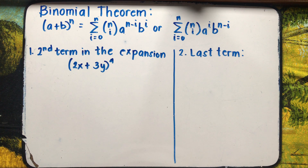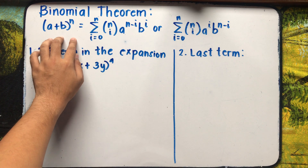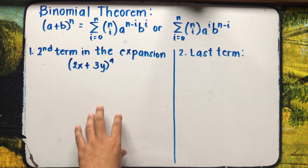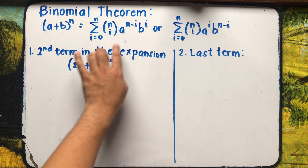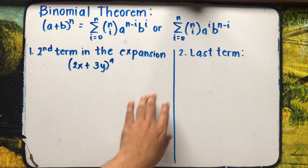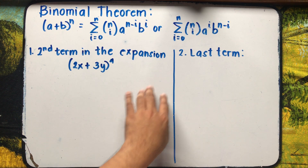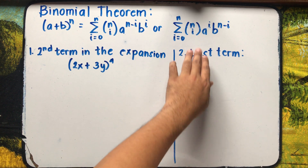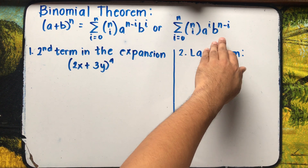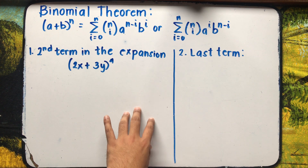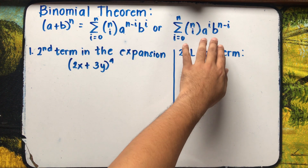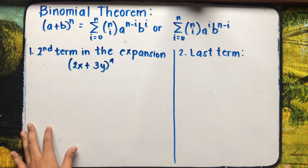Let us first review what we have discussed last time regarding binomial theorem. The expansion of (a+b) raised to n is equal to the summation of n combination i times a raised to n minus i times b^i from i=0 up to n. Or equivalently, the summation of n combination i, a raised to i times b raised to n minus i, when i equals 0 up to n.